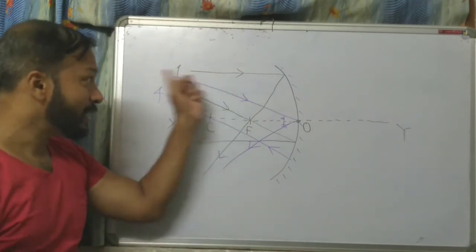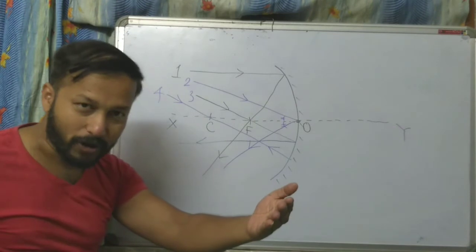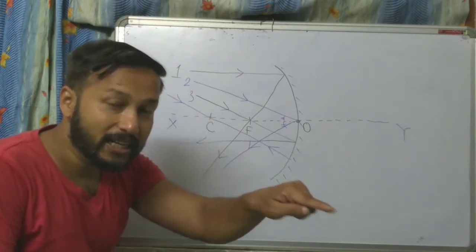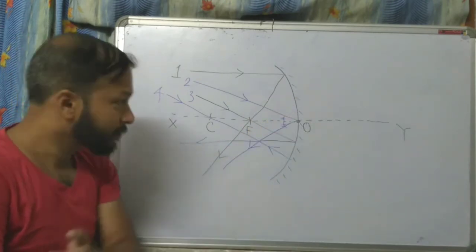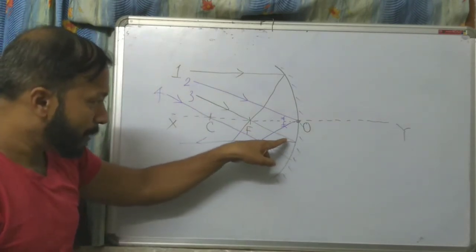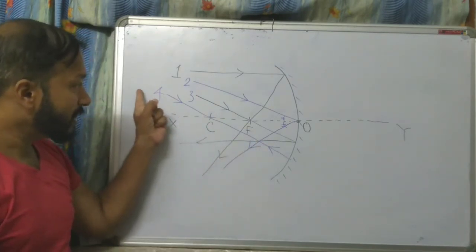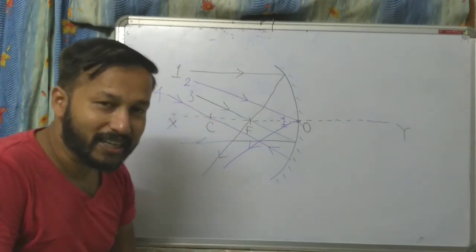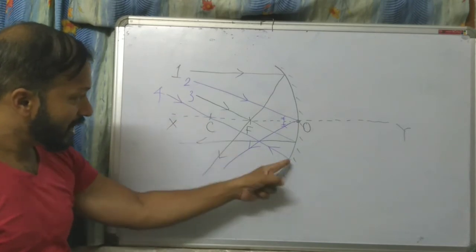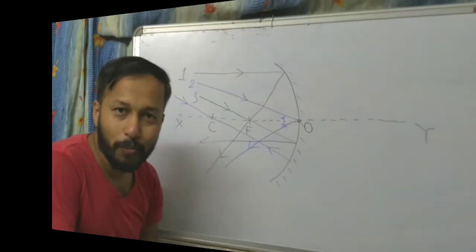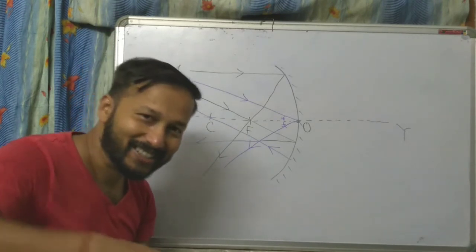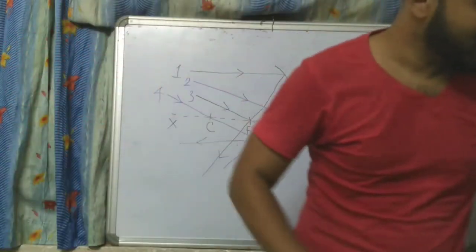So to summarize: number one, when a ray is parallel, after reflection it passes through the focus point. Number two, when you send the ray toward the optical center, by making the same angle it comes out. Number three, when a ray passes through the focus point, after reflection it becomes parallel to the principal axis. Number four, when the ray passes through the center of curvature, after reflection it comes back by the same path. You must practice these diagrams. We will meet in the third part of this chapter called Mirror. Thank you.